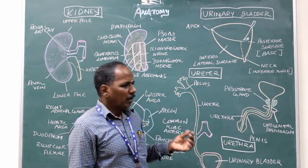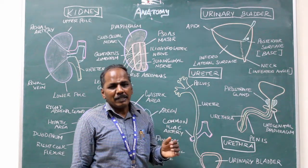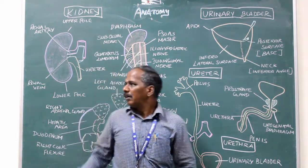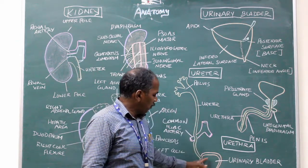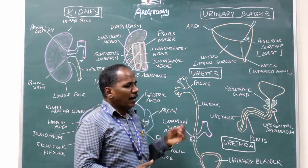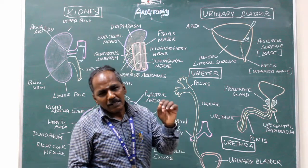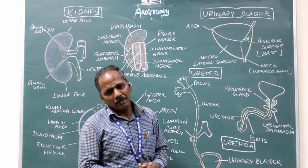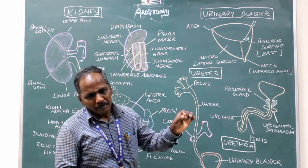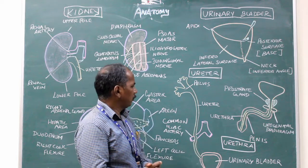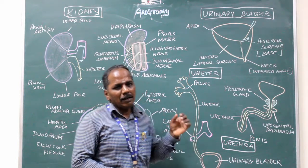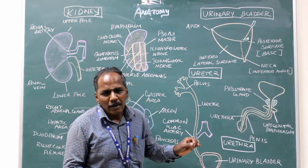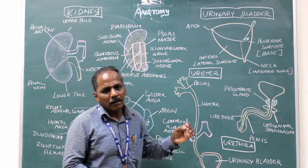Ureter. It is a tubular structure which serves to conduct urine from the kidney to the urinary bladder. It is 25 cm long and consists of an abdominal part and a pelvic part — the abdominal part is 12.5 cm and the pelvic part is 12.5 cm. It starts at the renal pelvis and ends at the superolateral angle of the urinary bladder.